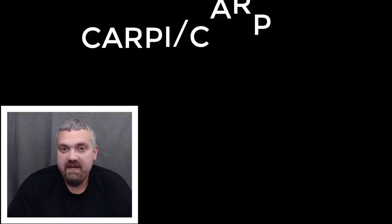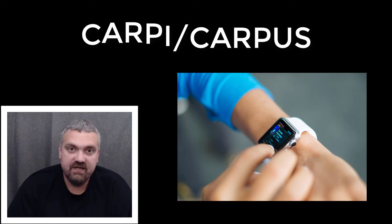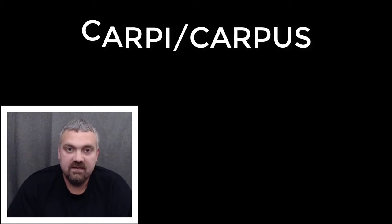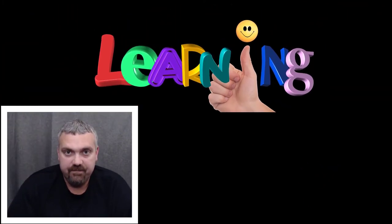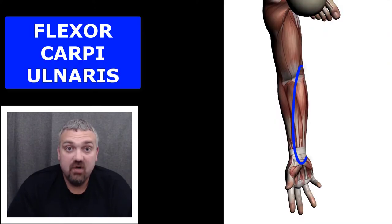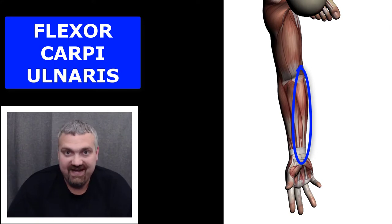Next, we have carpi or carpus, which means your wrist. There are tons of muscles that control the wrist. First thing I think of is carpe diem — seize the day. What do you seize the day with? Your hands, your wrists. So carpi, carpus means wrist. A key example here would be the flexor carpi ulnaris, which flexes the wrist on the ulnar or pinky finger side of the forearm.